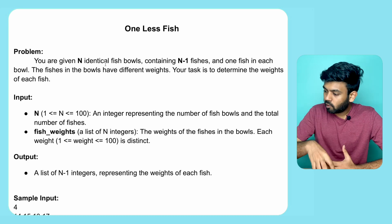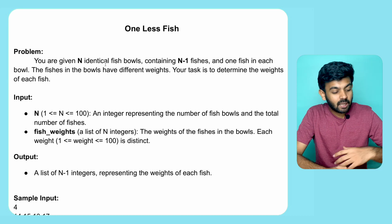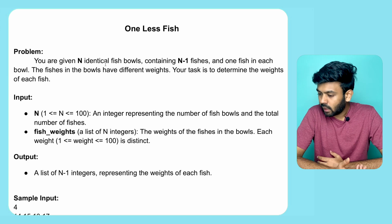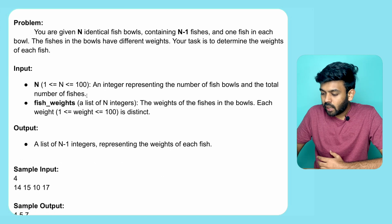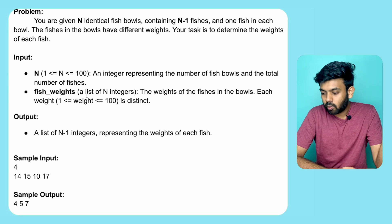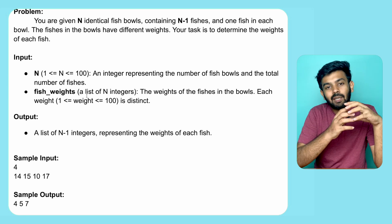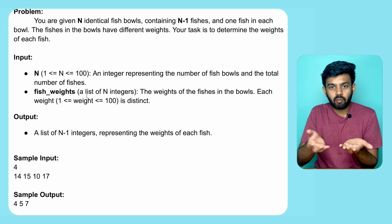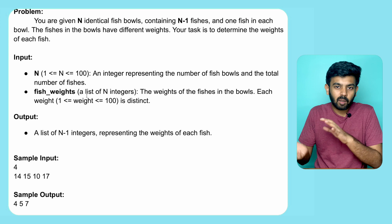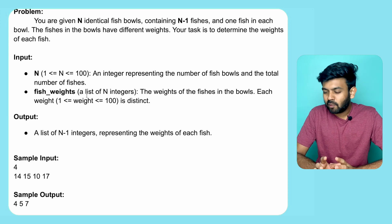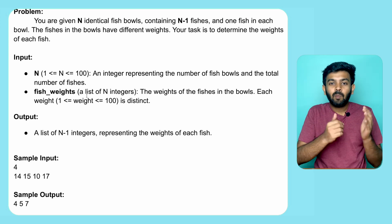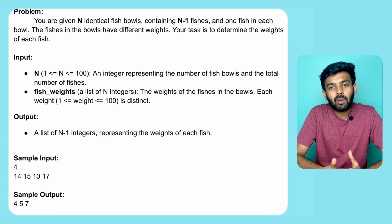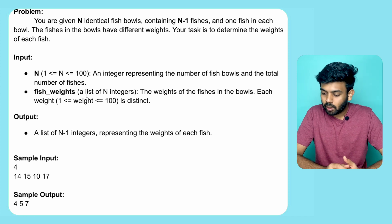Meaning, one bowl has no fish in it. The input is an N-1 number and we are given an N-sized array. In the N-sized array, there is a bowl along with its fish. If there is no fish, it is an empty bowl. We have to return an array of N-1 size, because there are N-1 fish.